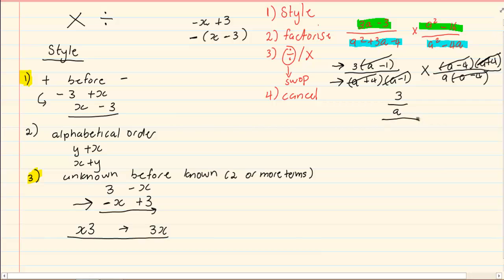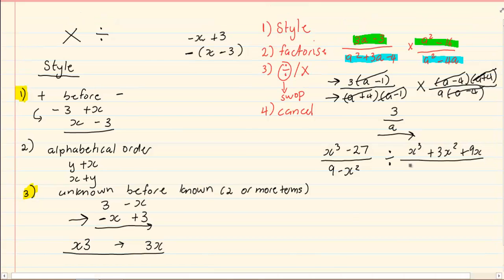Then I can cancel a minus 4 with a minus 4 and my answer 3 on the top and at the bottom I've got a, leaving my final answer as 3 over a. Now let's take the following example: x cubed minus 27 over 9 minus x squared divided by x cubed plus 3x squared plus 9x over 2x squared plus x minus 15.